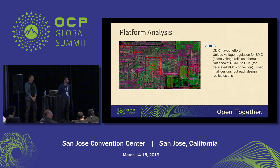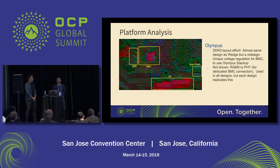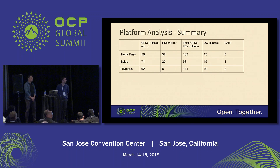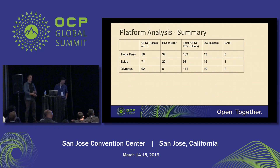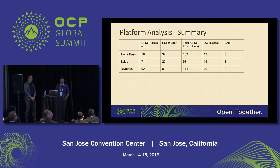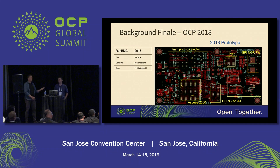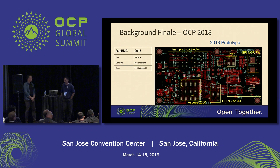We took a closer look at the schematics, built tables, and tried to understand how BMCs are being used — how they're the same, how they're different — and what requirements would drive toward having a standard available for all OCP platforms. We identified different signal types: inputs, outputs, interrupts, serial buses, etc. That drove us to define what is needed in total. We developed a first prototype presented last year, with a super high-density connector in the upper left with a very small pitch, providing that same functionality. This was as far as we got in 2018, and then we continued the conversation.